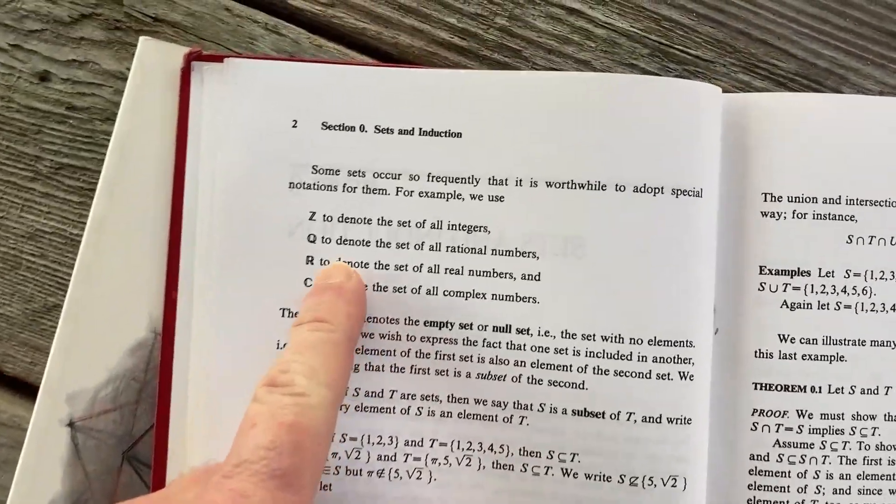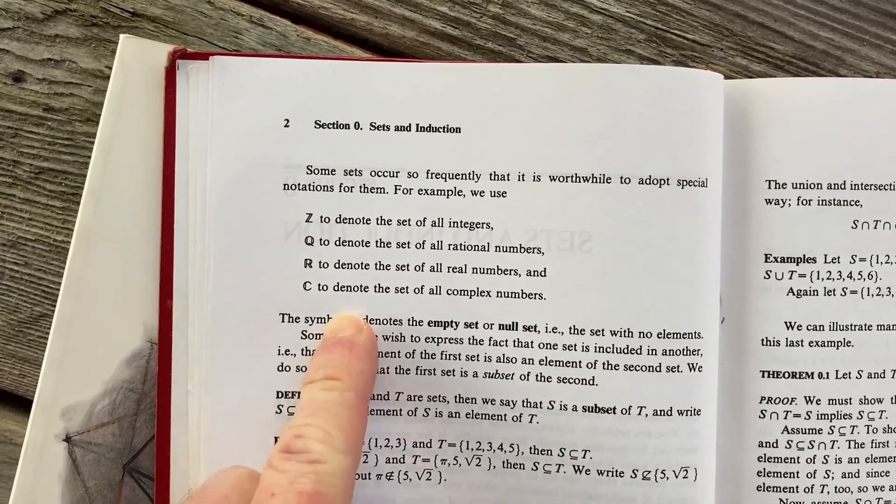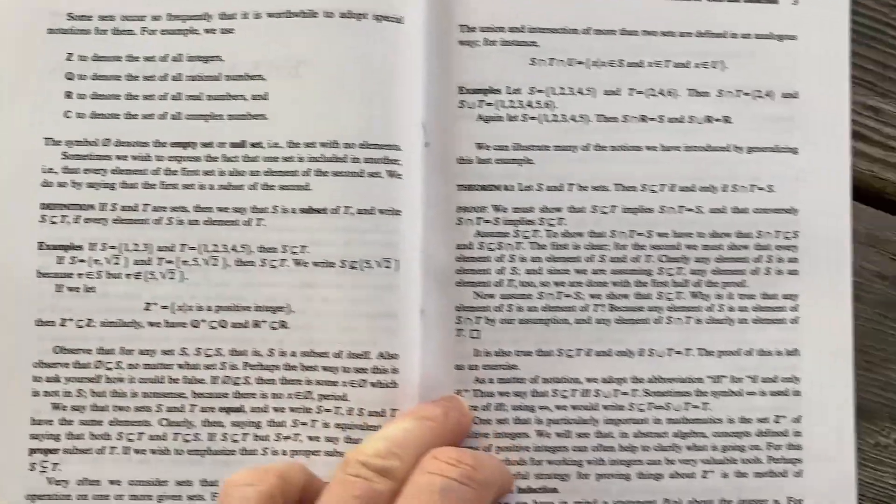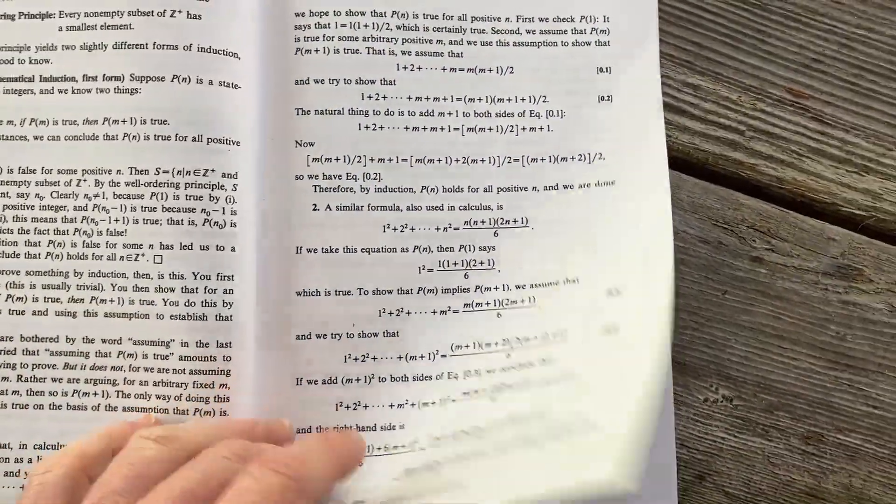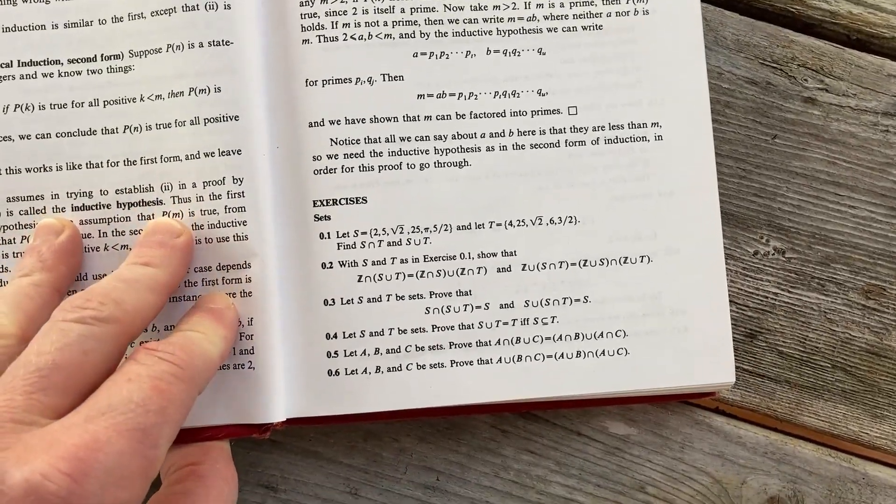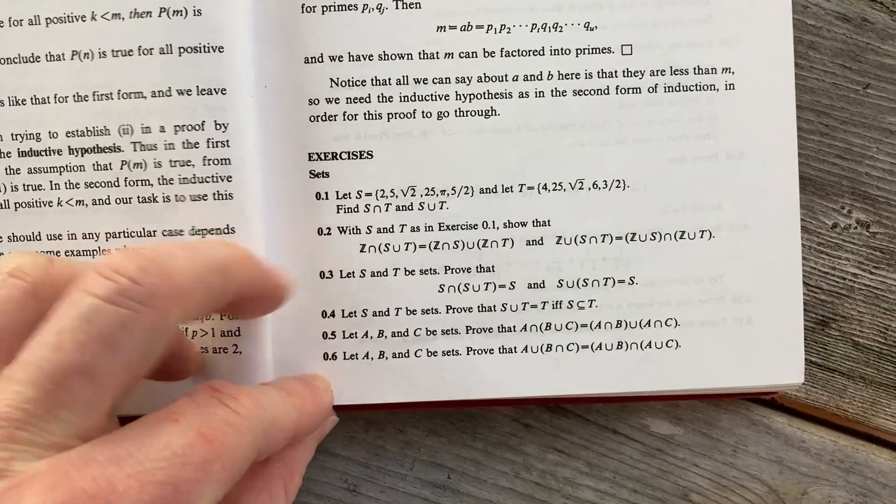It talks about the notation used throughout the book for the various sets. For example, Z is the set of integers, Q is the set of rational numbers, R is the real numbers, and C is the complex numbers. Very standard notation throughout the book. You can see here some of the exercises. Many of them are computational in nature, some of them are proof-based.